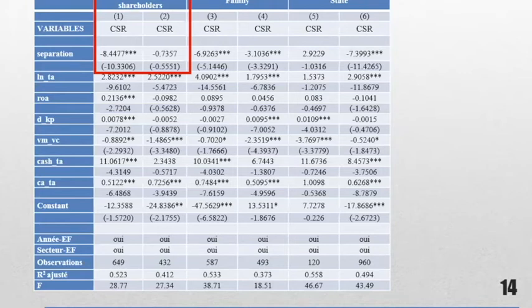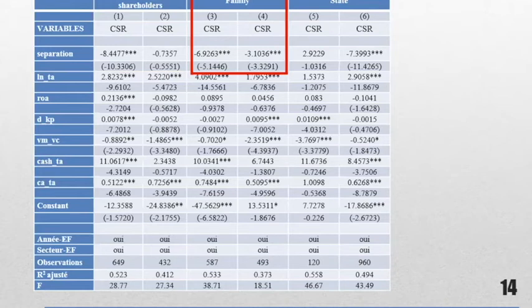In the second specification, we focus on family business. In column three, we have only family business firms. And in column four, we don't have family firms as control shareholder. Both columns show negative effect of separation. But if you notice in column three, the coefficient is almost double, minus 6.92. And when we don't have family firms, it's minus three. So we can say that family business enhances more the negative effect of separation.